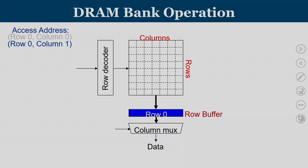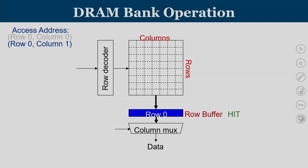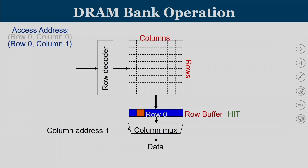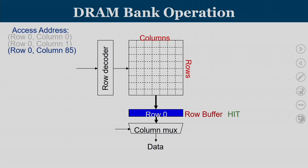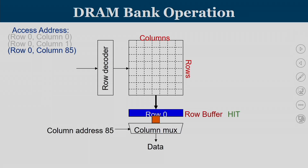If the next request from the CPU is row 0 column 1 — since row 0 is already in the row buffer, this is a row hit. With a row hit there is no need to give an activate command; simply give the column address. Column address 1: the contents of column 1 are transferred. Similarly, for address row 0 column 85, this is also a row hit since row 0 is already in the row buffer, so we only give column address 85 and those contents are transferred.